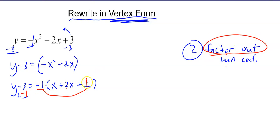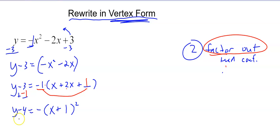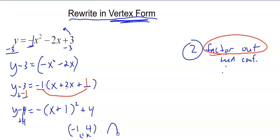That term you factored out affects how much you add or subtract to the other side. So we get y minus 4 equals negative 1 times (x plus 1) squared. The last step is to move the constant back over — add 4 to both sides. Now we have vertex form: y equals negative 1 times (x plus 1) squared plus 4. You can identify h and k: h is negative 1, k is 4. This graph opens downward because of the negative 1 out front.